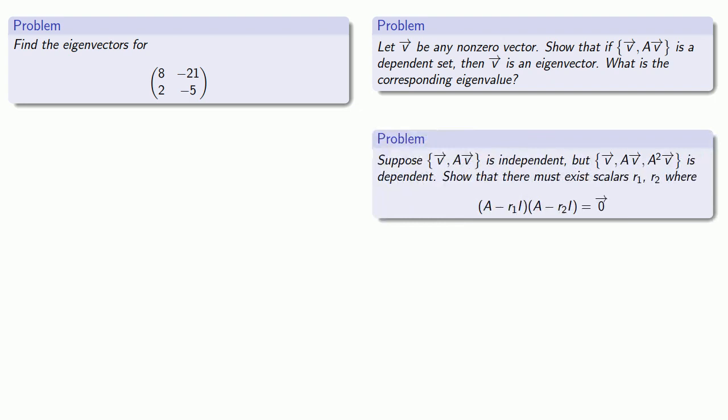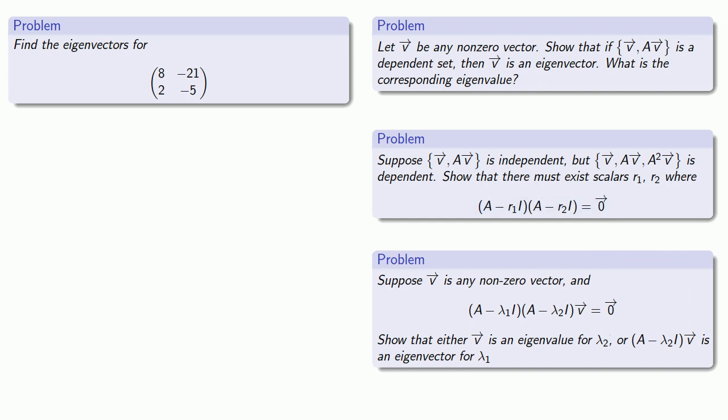But if {v, Av} was independent, but {v, Av, A²v} was dependent, we could factor a polynomial expression in A, and then one of the factors would give us an eigenvalue and at the same time compute an eigenvector.